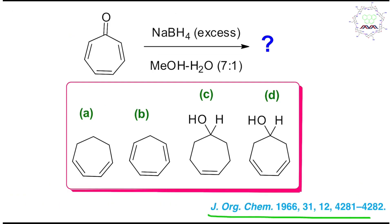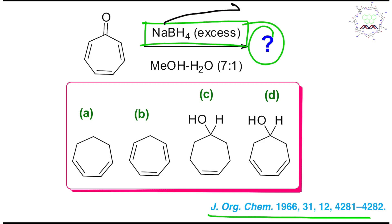This problem is taken from a reference source. The question involves tropolone — a conjugated ketone — which reacts with excess sodium borohydride. What is the product? Generally, we know sodium borohydride is a reducing agent, and a ketone undergoes reduction with sodium borohydride to give the corresponding alcohol. So, what is the correct product here?